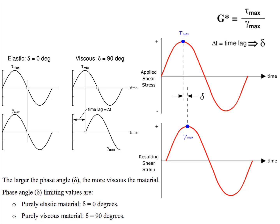The DSR test measures a specimen's complex shear modulus G* and the phase angle delta. The complex shear modulus G* and the phase angle delta are determined by two equations. The figure shows the applied shear stress tau versus time, and the resulting shear strain gamma versus time. The complex shear modulus G* equals tau max over gamma max, and the phase angle delta is the time lag between the occurrence of tau max and gamma max.